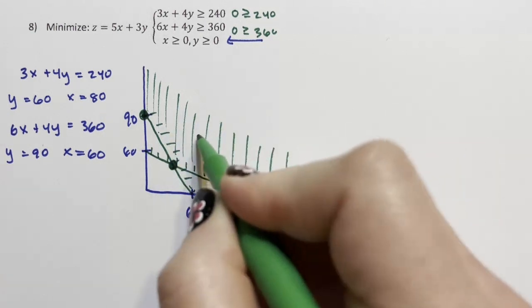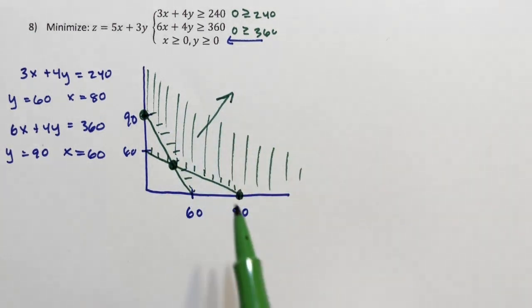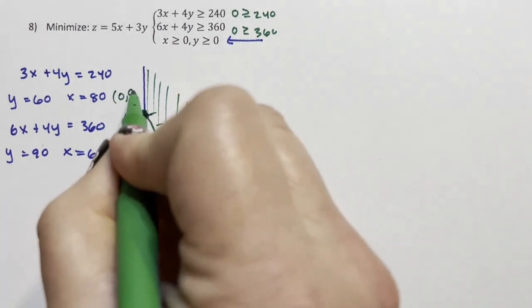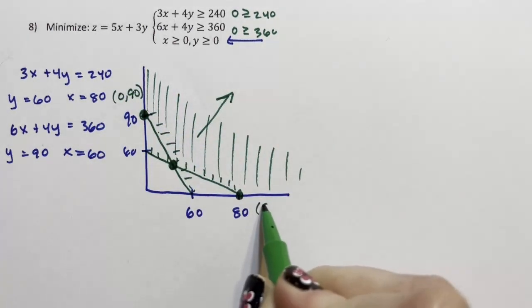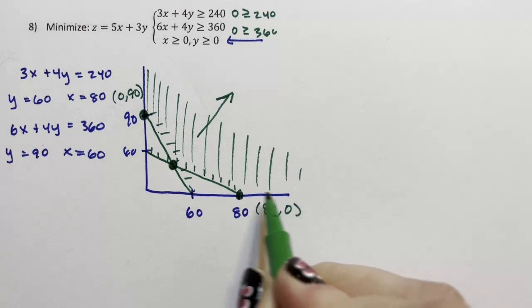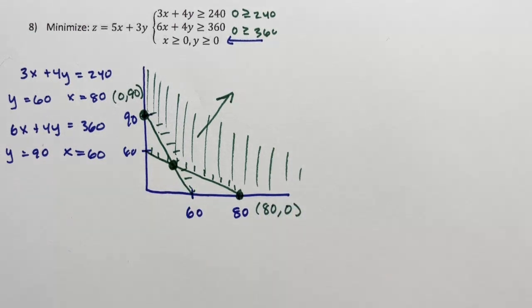here, or here. There's an infinite number of points. This goes forever. But we will minimize at one of those three points, either at 0, 90, 80, 0, or at this point, which we don't know yet. So we do need to figure out that one unknown point.